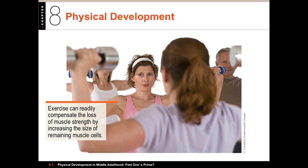Other changes can include metabolism, which goes down partly because there is a change in the relative amounts of muscle and fat, and fat burns fewer calories than muscle. There are also changes in muscular mass, strength, bone density, aerobic capacity, and blood sugar tolerance. Some of these changes in middle adulthood can be controlled or reversed through exercise or diet, which is what we see in this slide.